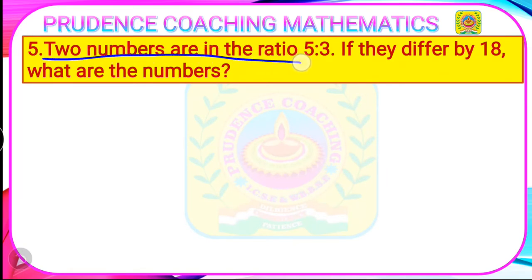Two numbers are in the ratio 5 is to 3. If they differ by 18, what are the numbers? So let us understand the question first.